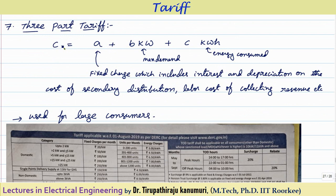The last one is three-part tariff, used for large consumers. Here the cost involves three parts: A is called the fixed charge, which includes interest and depreciation on the cost of secondary distribution, labor cost of collecting the revenue, etc. Then B times kilowatt is the maximum demand charge, and C times kilowatt-hour depends on the energy consumed. This maximum demand can be either in kilowatt or kVA. If you want to encourage the consumer to operate at higher power factor, keep it as kVA; if that is not a concern, then we can keep it as kilowatt.